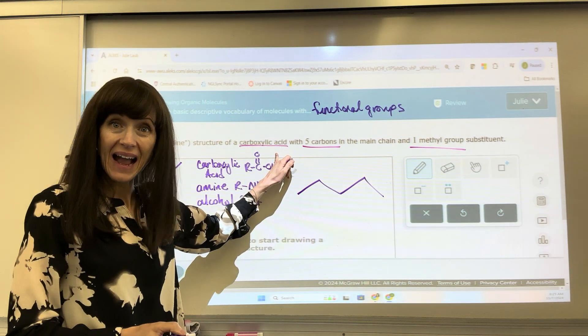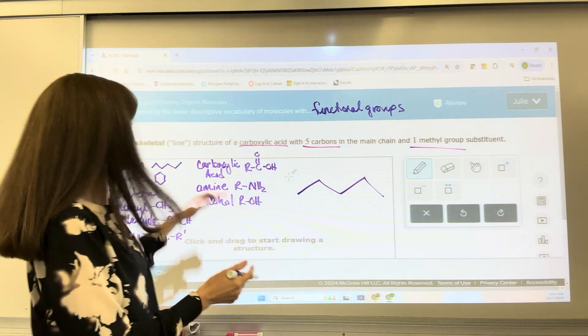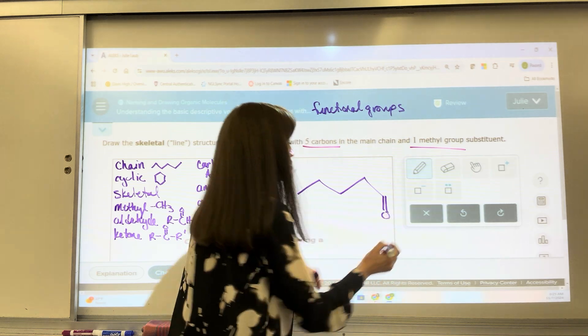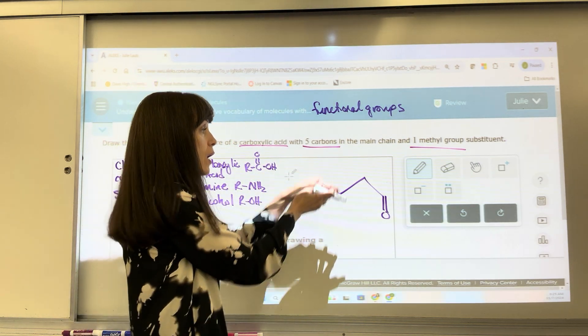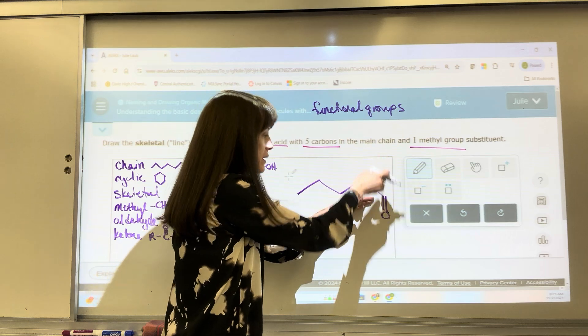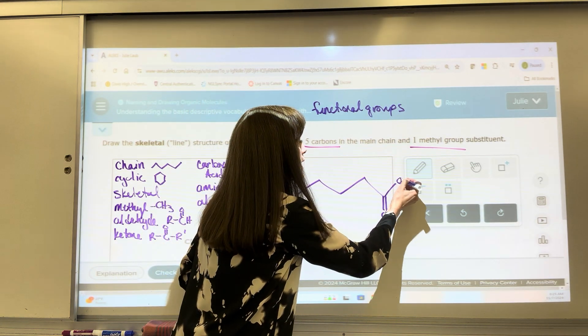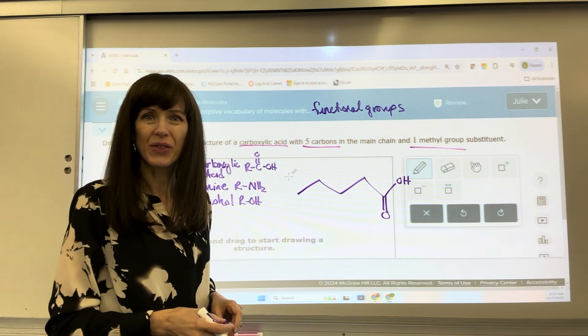Now, we need to put a carboxylic acid on this. So that's at the very end, I have a double bonded oxygen. Remember, we always go away from the chain. So if I'm at the low point, the double bonded oxygen is going to go down and then we'll have the alcohol, the OH.